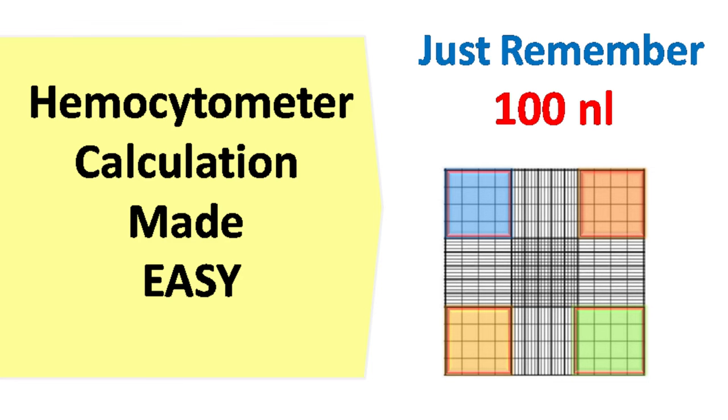Hey everyone, quick biochemistry basics here. Today I'll be talking about how to do calculations for hemocytometer without using any formula. Yes, without using any formula. All you need to remember is the number 100. To be more precise, 100 nanoliters.